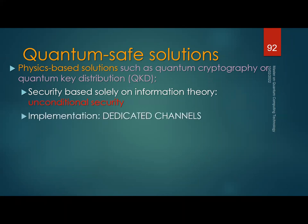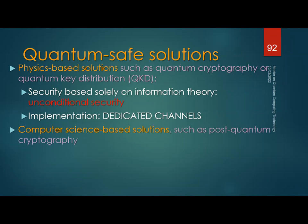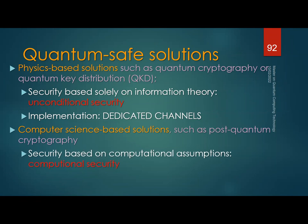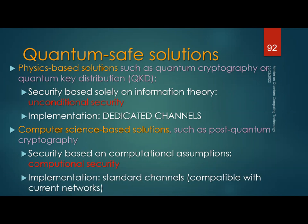The downside is that it requires dedicated technology and is not automatically integrated into current networks. The other type of solution is computer-science-based: post-quantum cryptography. Its security rests on computational assumptions — problems thought to be hard for quantum computers, but not proven so. Someone could find an algorithm to break it. However, implementation is straightforward — software and hardware compatible with current communication networks.